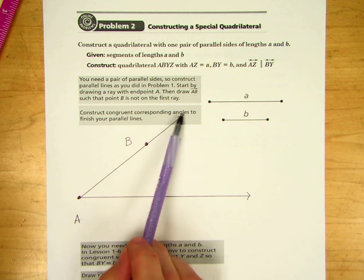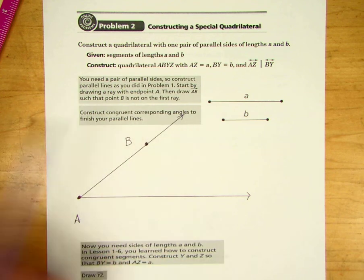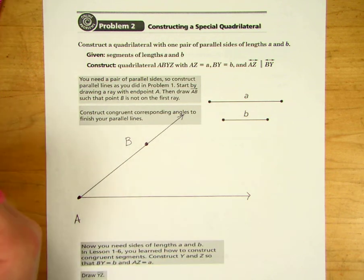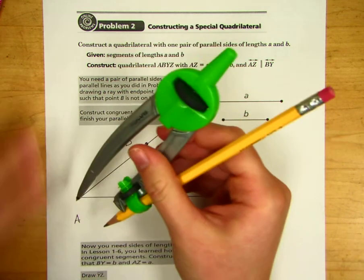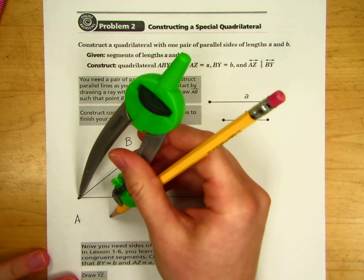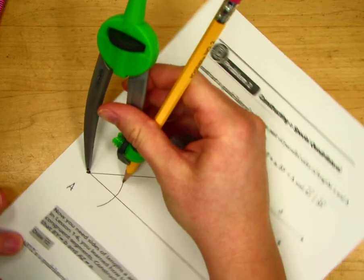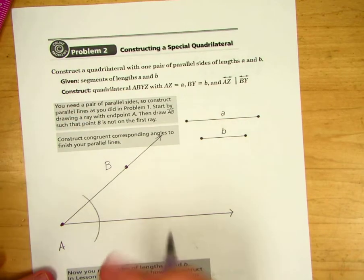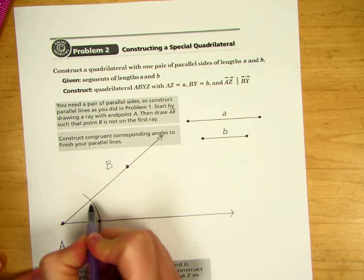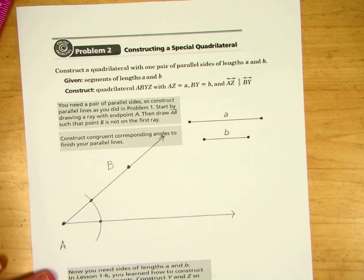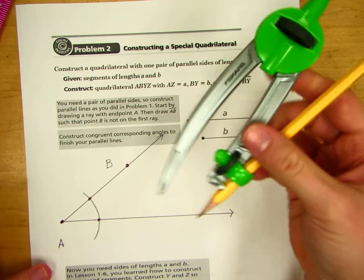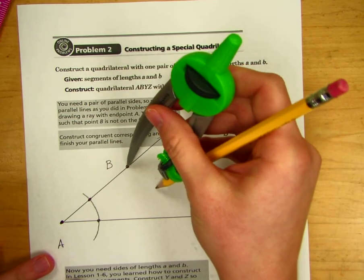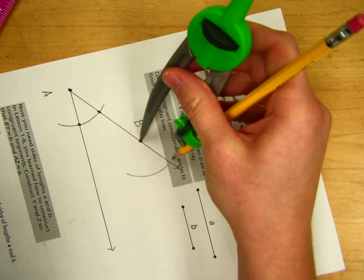Construct your congruent corresponding angles to finish your parallel lines. Once again, we're going to take our compass, put our first tip on A, and draw our arc to get this angle. I'm going to mark these intersections here. Take that same exact distance, go up to B, and mark that at B.